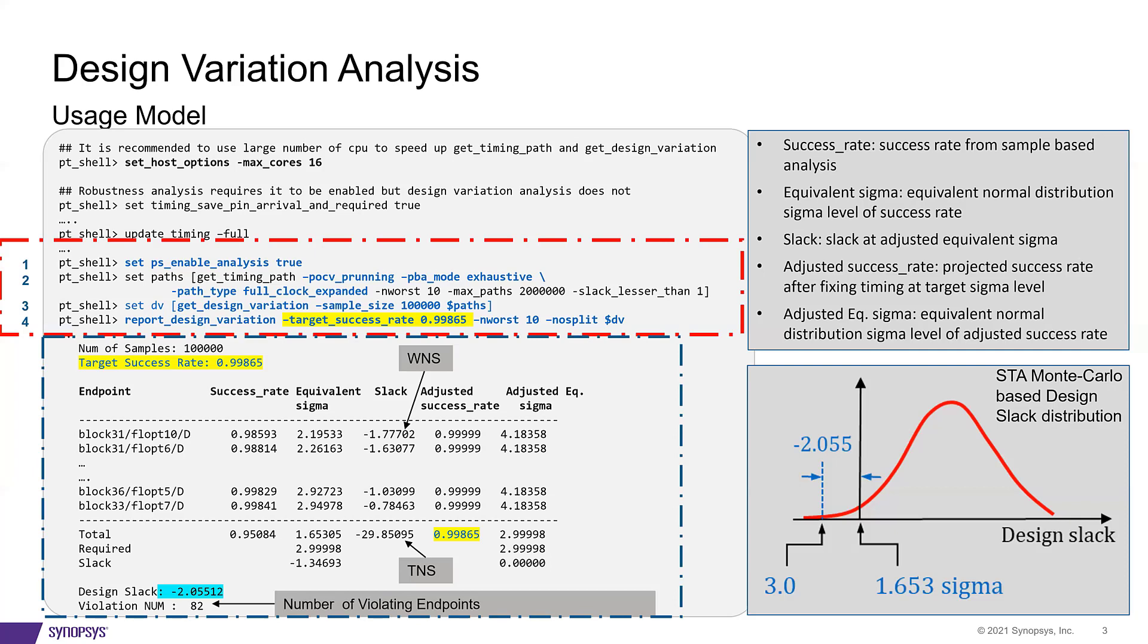Third column is the equivalent sigma, which is the equivalent normal distribution sigma level corresponding to the success rate value for that endpoint. Fourth column is a slack column that shows the amount of timing improvement needed to get to the target endpoint success rate.